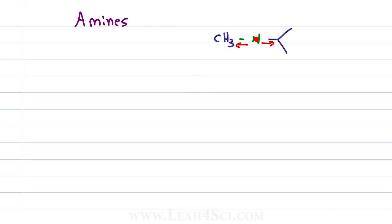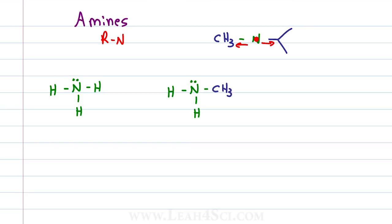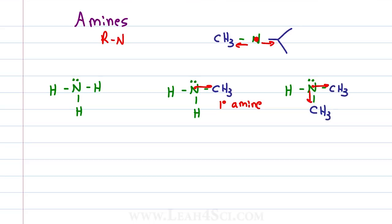Let's classify amines starting with ammonia. Ammonia is not an amine because it's not bound to any carbon atoms. The amine functional group is an R bound to an N, where R can be any sort of carbon chain. The simplest amine would be a nitrogen bound to two hydrogen atoms and one carbon, for example a CH3. This nitrogen is bound to one carbon, making it a primary amine. If I remove two hydrogens and swap them for R groups — for example two methyls — when you put your pencil down on nitrogen, you get two lines coming out towards carbon. Nitrogen is bound to two R groups, making this a secondary amine.